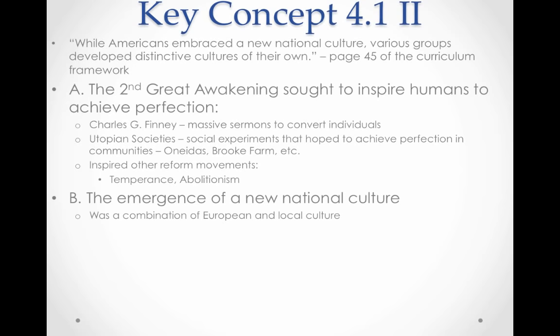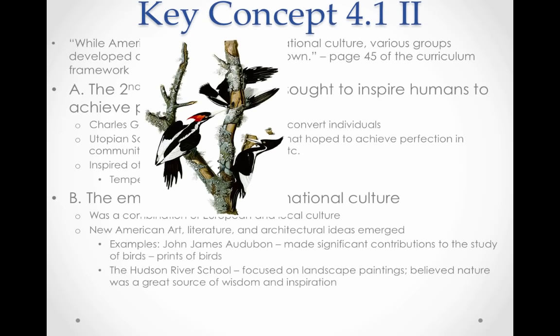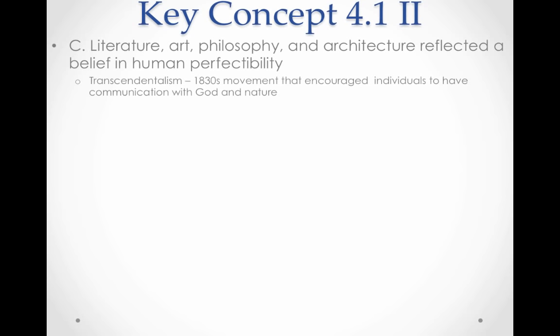A new national culture emerged, combining European, local, and American influences. New American art, literature, and architectural ideas developed. John James Audubon was a great outdoorsman who made significant contributions to the study of birds, discovering species and writing very popular books. The Hudson River School focused on landscape paintings and believed nature was a great source of wisdom and inspiration. Literature, art, philosophy, and architecture all reflected a belief in human perfectibility.